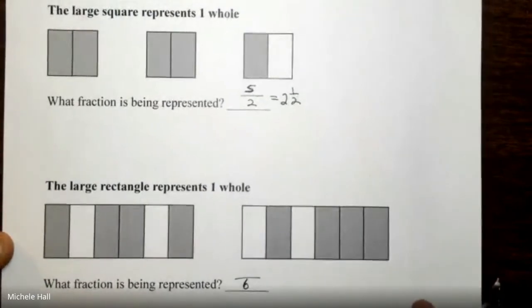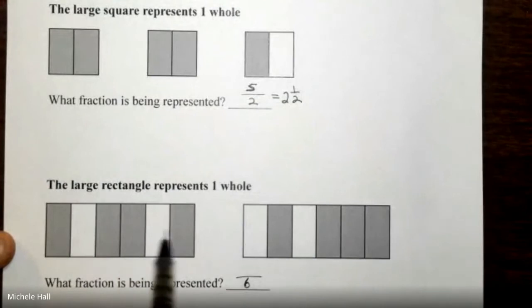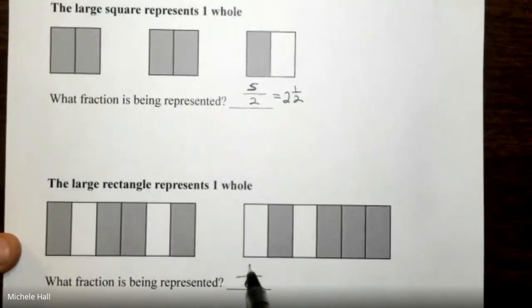How many parts per whole will we have? One, two, three, four, five, six, seven, eight. We have eight. Six represent the fraction being shaded.